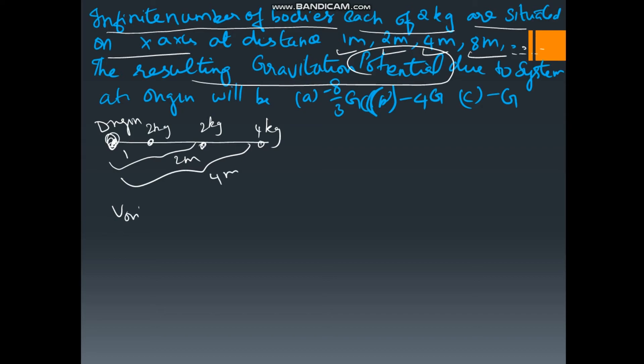What is the potential at this point? They are asking at origin. Potential at origin is equal to potential due to first mass, potential due to second mass and it goes on. Potential formula, we know that it is minus GM by distance. So minus G into mass is 2 kg divided by distance for first mass is 1 meter plus minus G into mass 2 kg and distance of second mass is 2 meter plus third mass minus G into 2 divided by 4 meter.